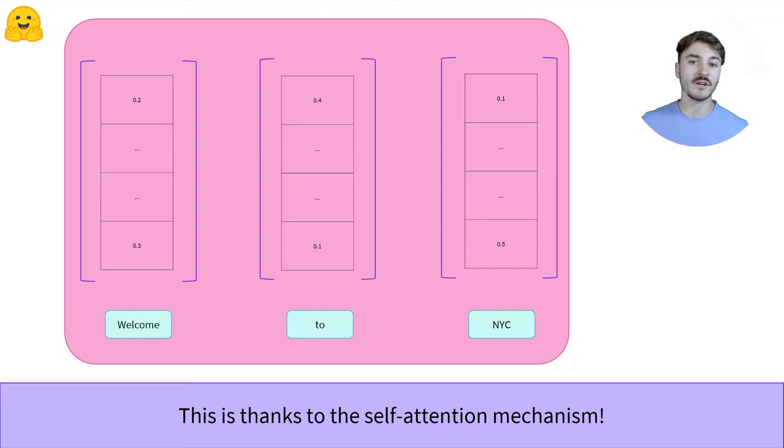As we've seen before, this means that the resulting representation of a word has been affected by other words in the sequence. We won't dive into the specifics here, but we'll offer some further readings if you want to get a better understanding at what happens under the hood.